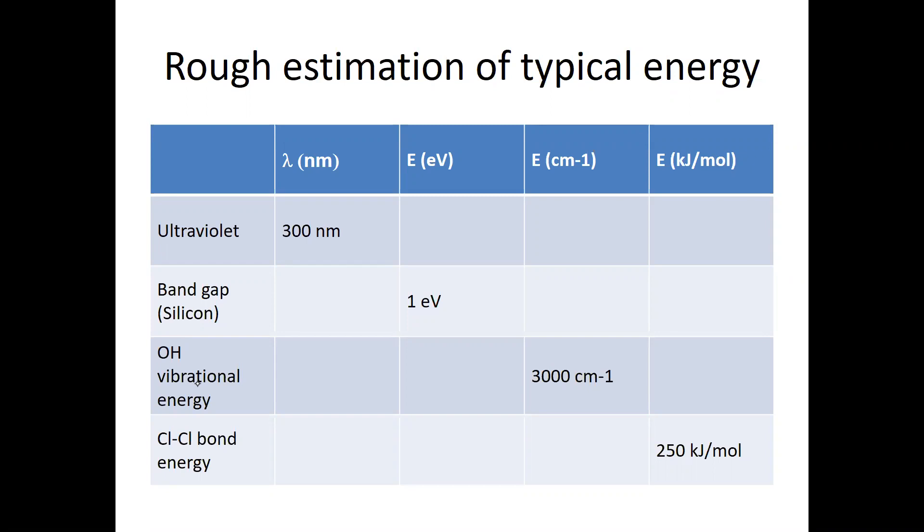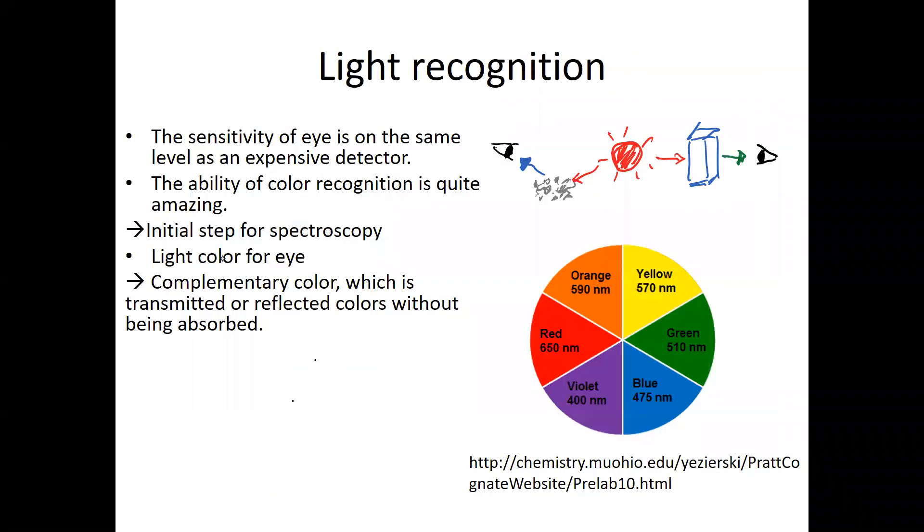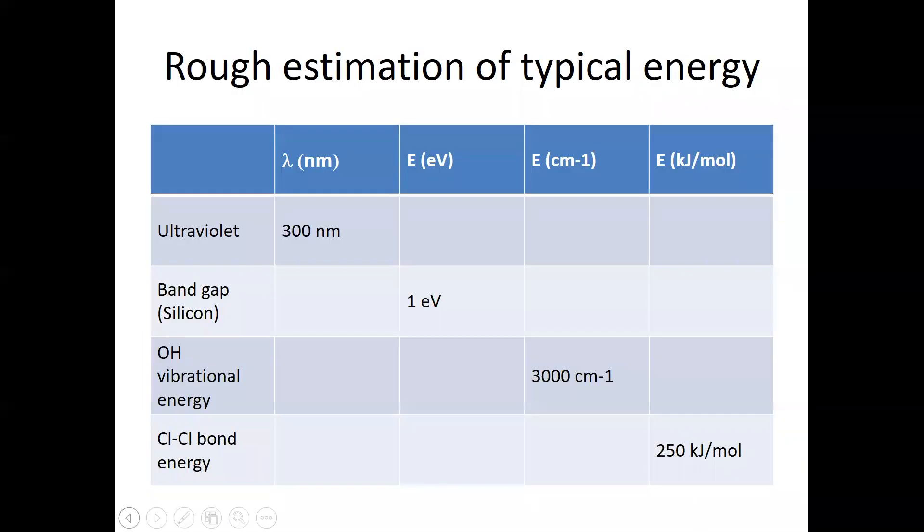And then, I showed some of the examples, some of the important examples. For example, one is in the case of ultraviolet light, and the wavelength is given by 300 nanometer. And in physics, silicon is one of the most important materials. And the band gap of silicon is about one electron volt.